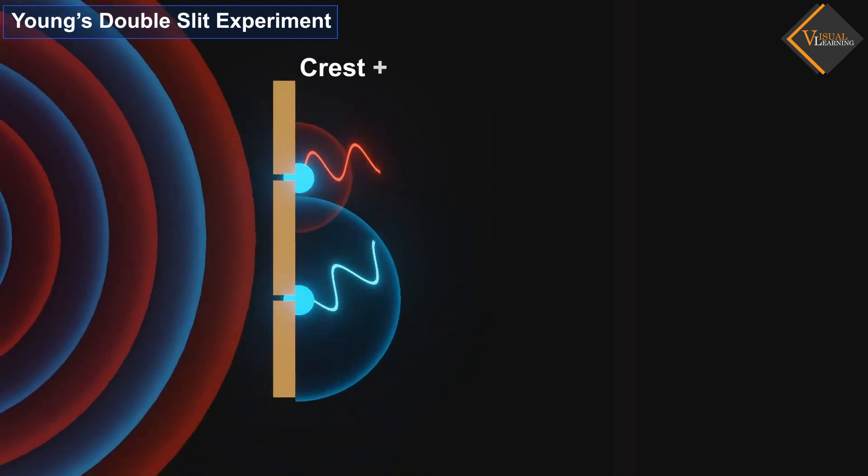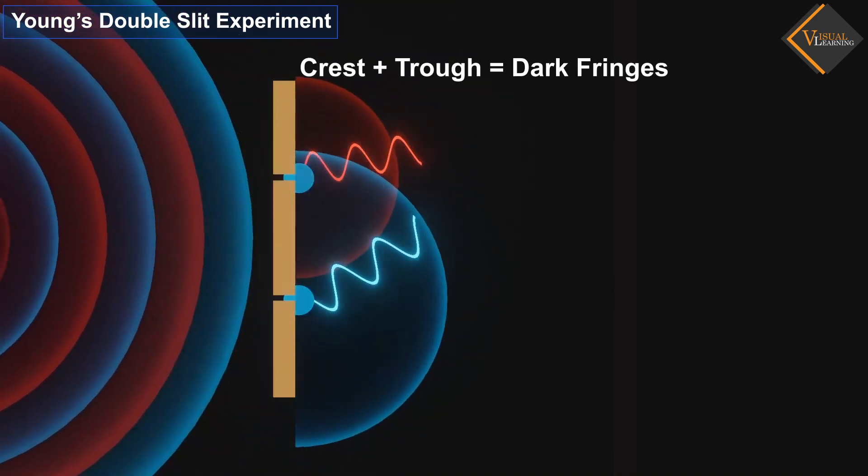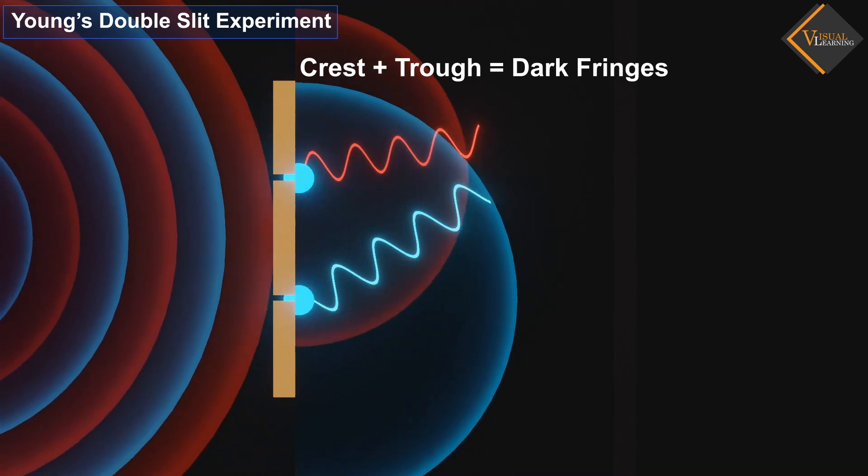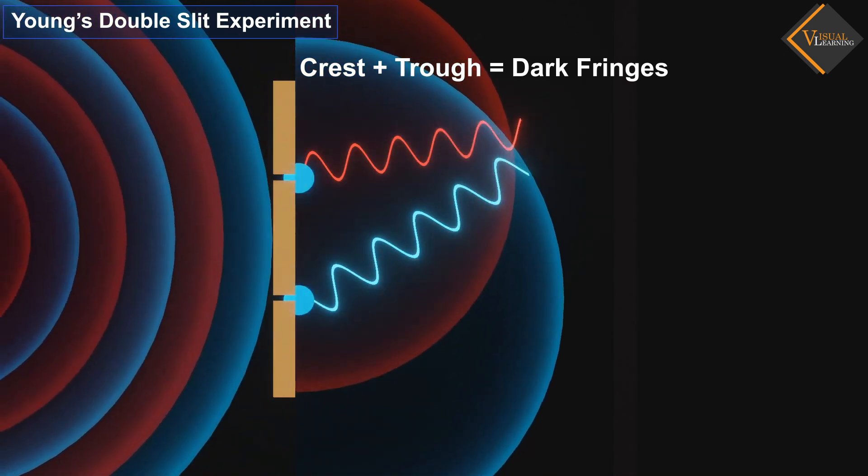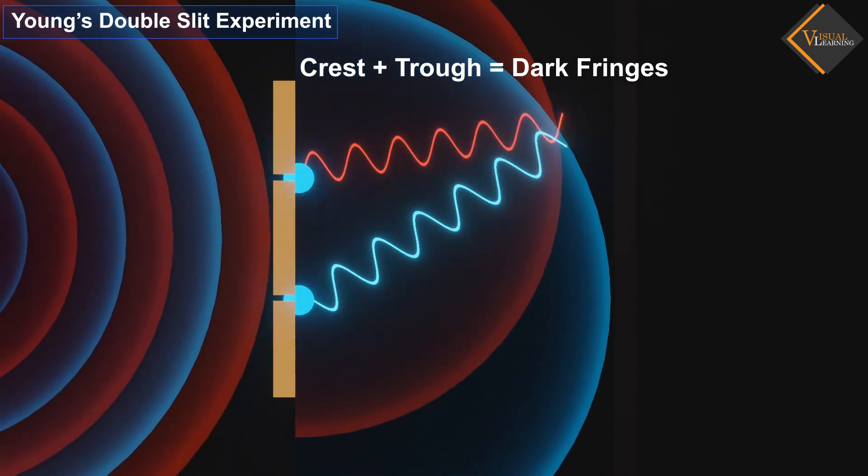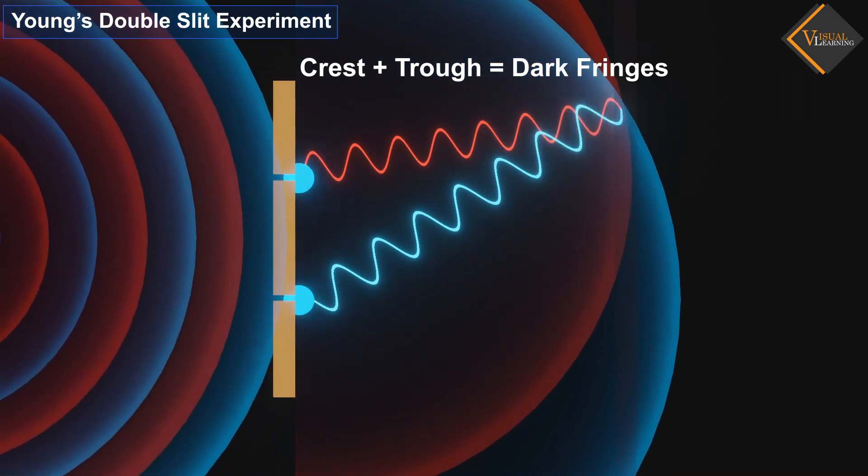Conversely, when a crest of one wave superimposes with the trough of the other wave, they cancel each other out, and the intensity of the light wave becomes minimum at that point, creating dark fringes on the screen.